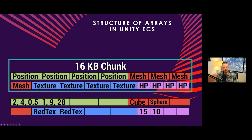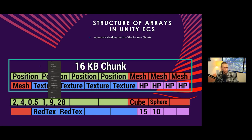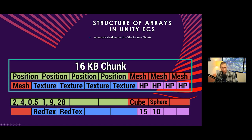Let's talk about how SOAs work in Unity ECS. Unity automatically does a lot of this for us. Chunks are 16-kilobyte blocks of memory that hold all the data for a specific component type. In a real ECS chunk there would be much more than shown here, but you can see that things are broken up into SOA: all the positions together, followed by all the meshes, all the textures, and all the health values — data blocked together.